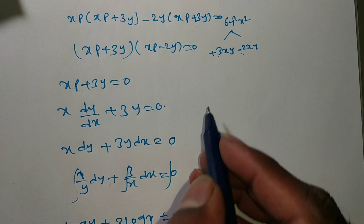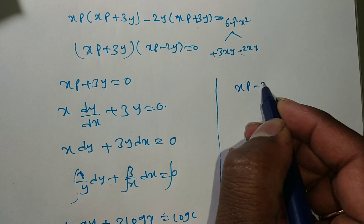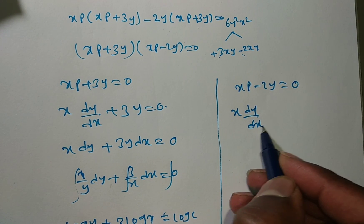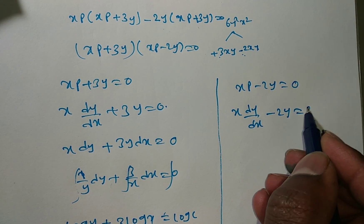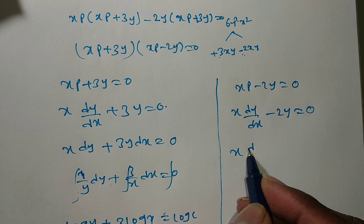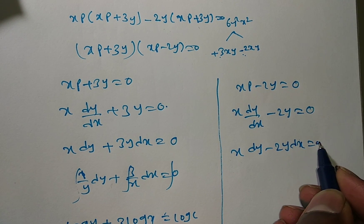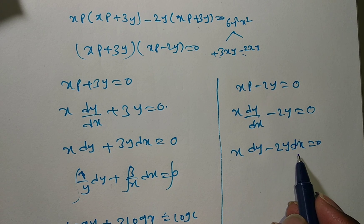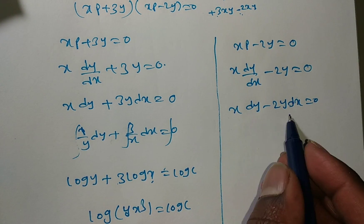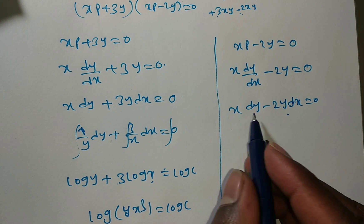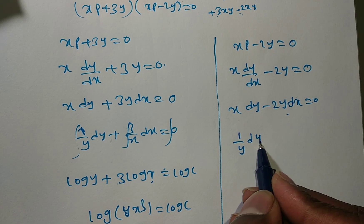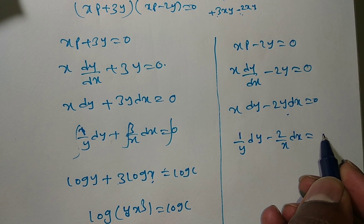Going to the second factor: xp minus 2y equals zero. Replacing p with dy/dx: x·dy/dx minus 2y equals zero. Rearranging: x dy minus 2y dx equals zero. Cross-multiplying: 1/y dy minus 2/x dx equals zero.